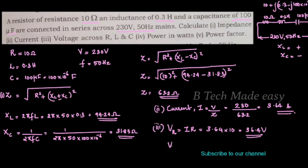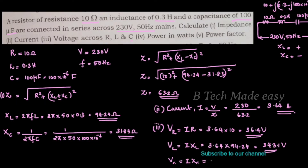We find the voltage across L, which is VL equal to I into XL, where XL is 94.24 ohm. For voltage across C, VC is equal to I into XC, where I is 3.64 and XC is 31.83, giving VC equal to 115.86 volt.